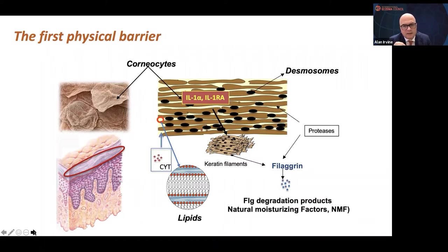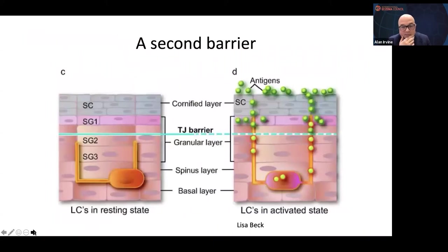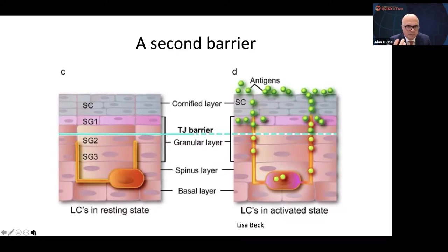In the barrier there are also lots of preformed cytokines, including most importantly IL-1 cytokines — IL-1 alpha and IL-1 receptor antagonist — all very highly expressed in the barrier as part of your innate defence. And there's a second barrier: the tight junction physical barrier, which is between stratum granulosum layers 1 and 2. There are three different key proteins involved in tight junctions, and in normal resting, inactivated barrier, there's no activation of the Langerhans cells — they're unable to penetrate through the tight junction barrier in stratum granulosum layer 2.